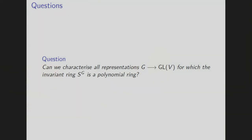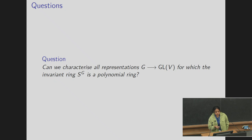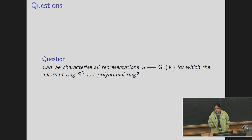One of the very early questions in invariant theory is: what is the structure of the invariant ring? In particular, how many generators do you need to generate it as a K-algebra, and when is it the simplest possible ring — that is, when is it a polynomial ring? We are going to consider this question in this lecture.